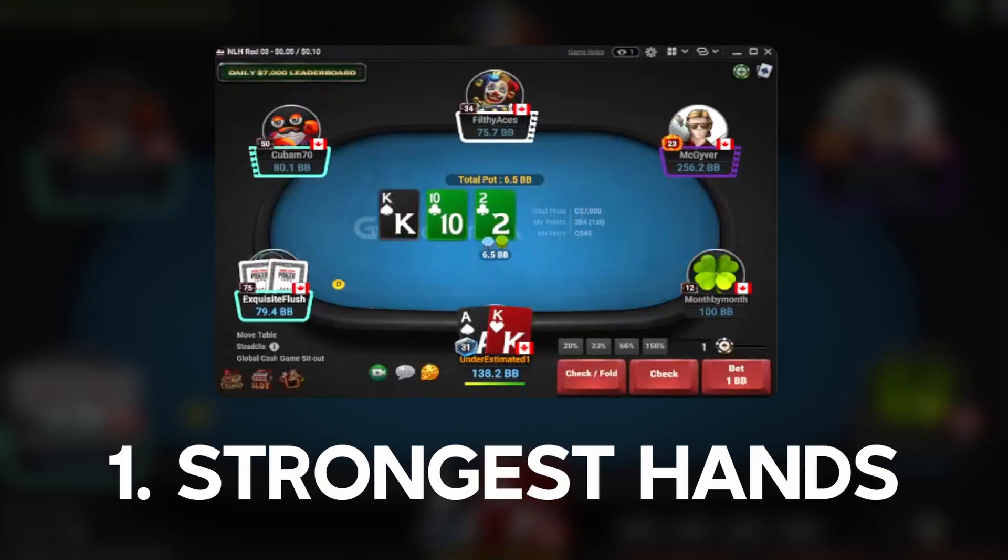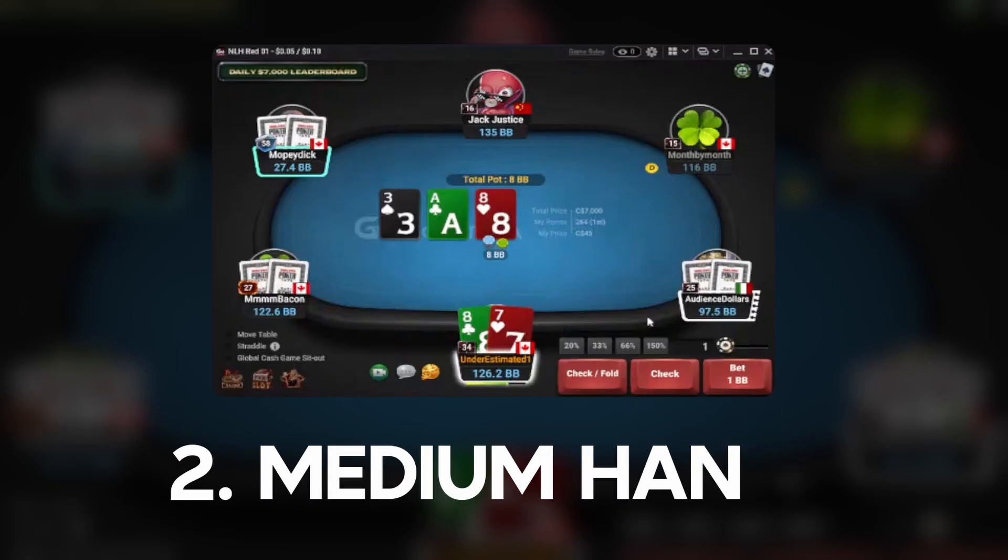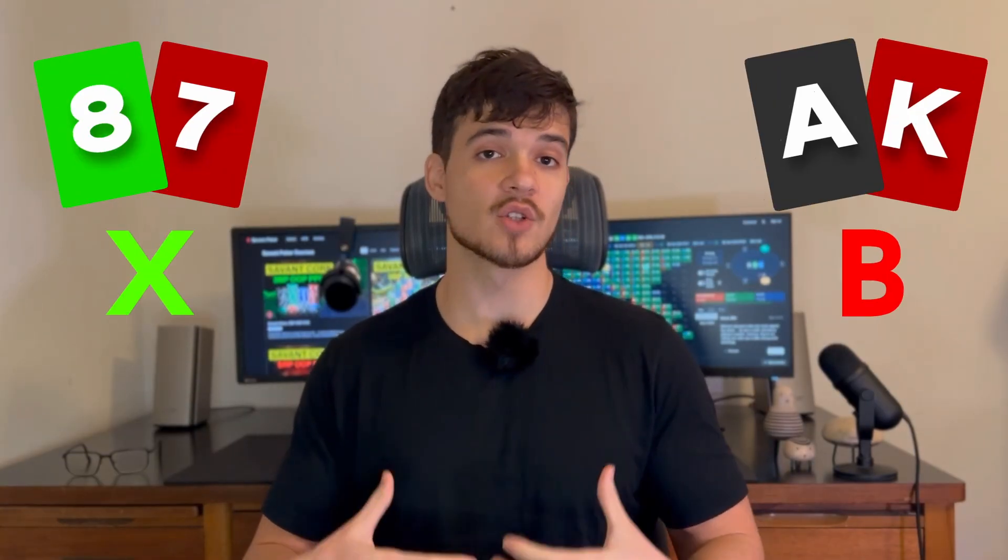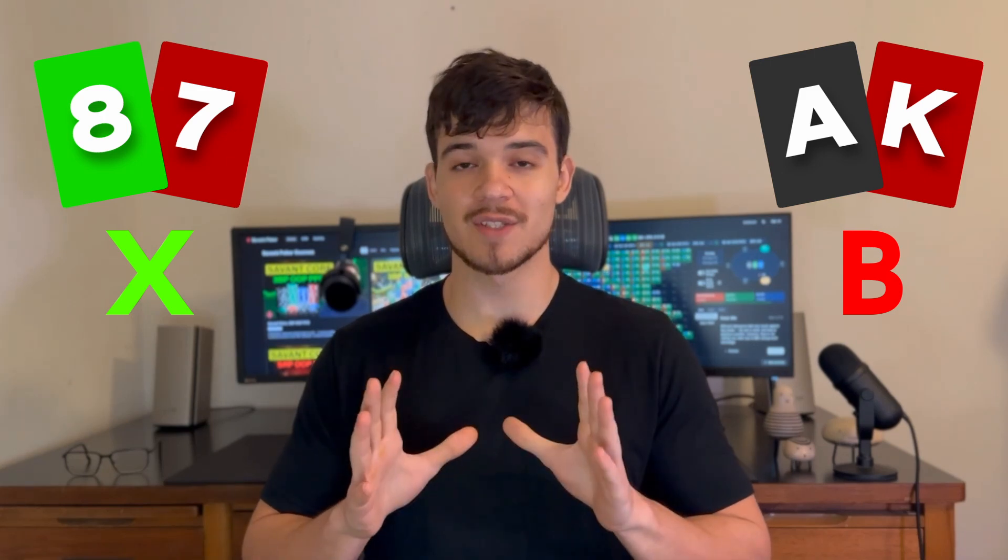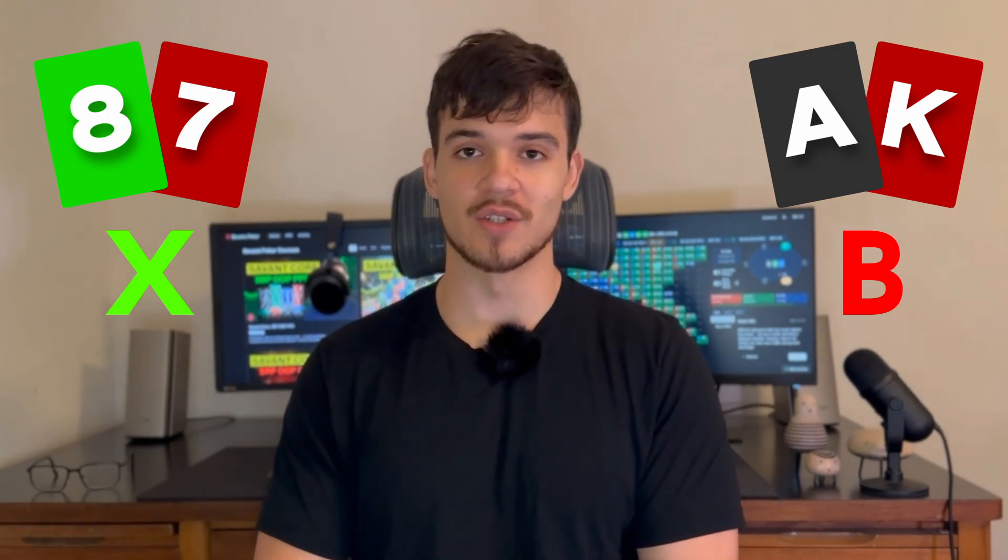I paid close attention to two things. Number one, how they were playing their strongest hands, like top pairs. And number two, how they were playing their medium strength hands, like second pairs. Based on thousands of hours of past playing and coaching experience, I expected to see that they would check too many medium strength hands and bet too many strong ones. I was right, but the extent to which I was right shocked me.